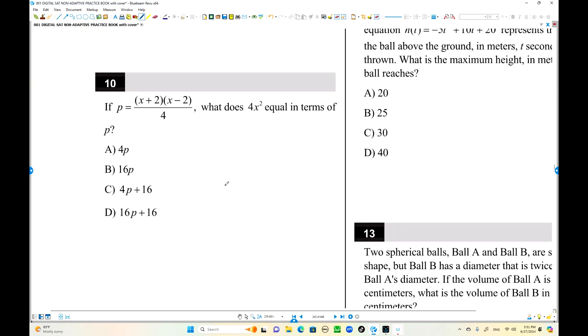Here is number 10. What is 4x squared in terms of p? (x+2)(x-2) equals p. x squared minus 4 equals p. x squared equals p plus 4. They're asking 4 times x squared, times 4 is 16p plus 16. That equals 4x squared. Choice D is the answer.